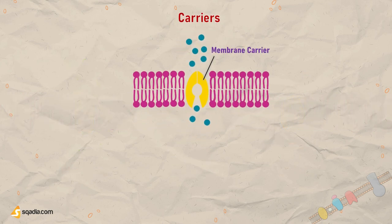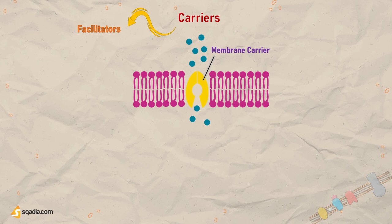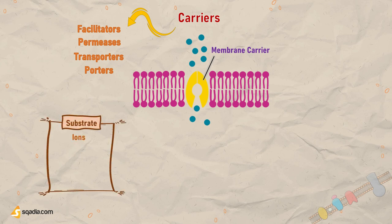Think of them as the molecular bouncers of the cell, controlling what gets in and out. They're the gatekeepers that enable the cell to interact with its environment, making sure that it gets the nutrients it needs and gets rid of waste products. Carriers are also known as facilitators, permeases, transporters, or simply porters. Common substrates for carriers are ions and small, soluble organic molecules, but some substrates are also lipid soluble.